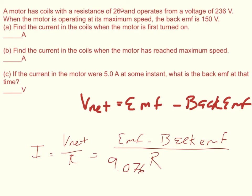And then whenever it's at its maximum speed, I have my maximum back EMF. And so the back EMF, it tells me, is 150. So I would do 236 minus 150 to find the net voltage. The net voltage in that case would be 86. When I divide that by the resistance that I have been given in the problem of 26, I would get for part two that my current is 3.307 amps.